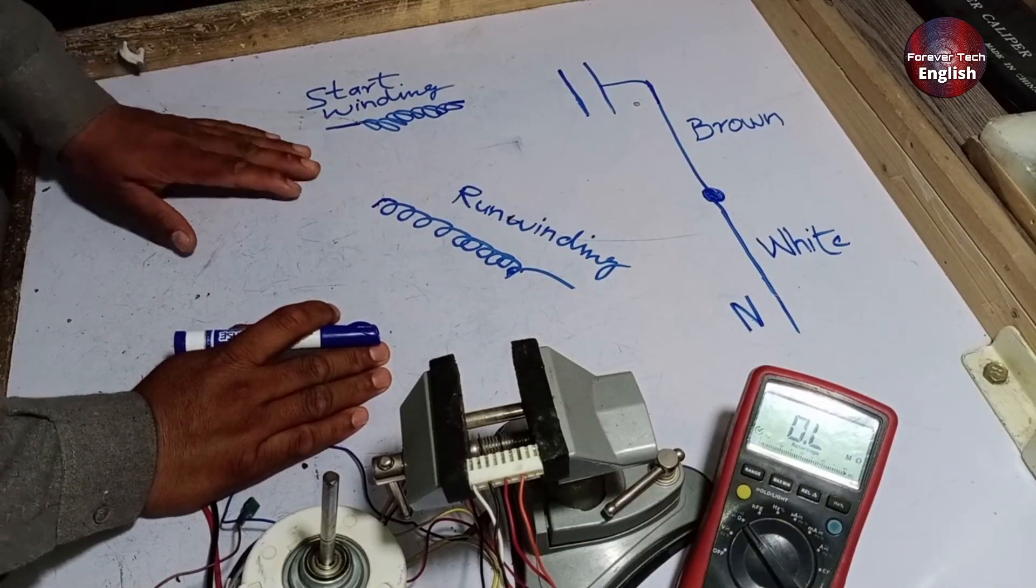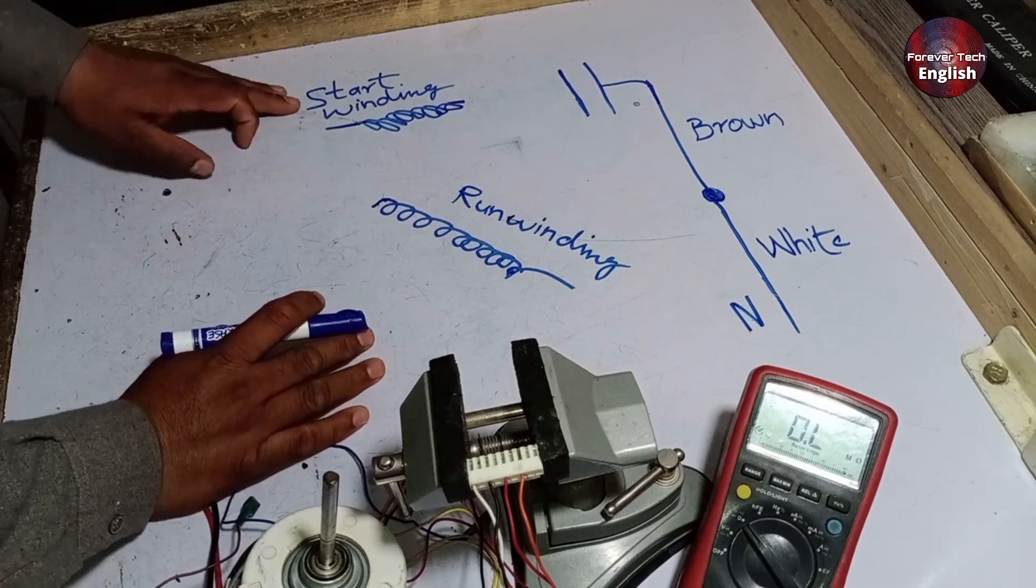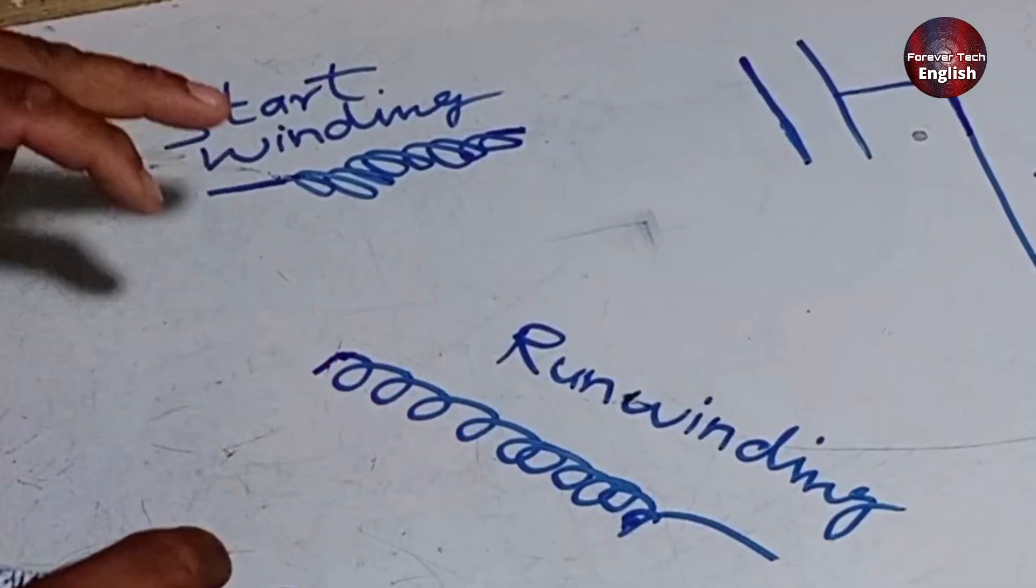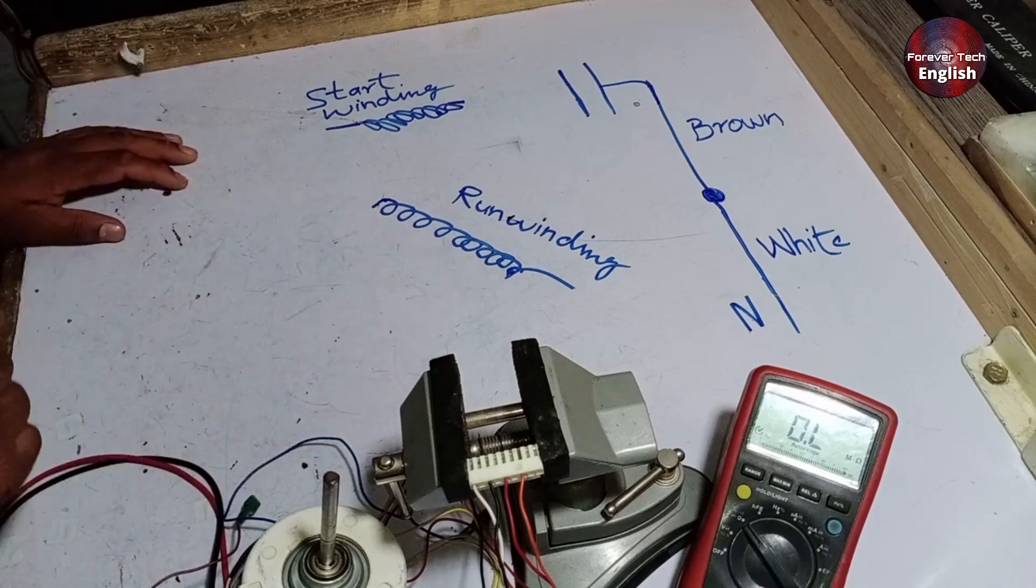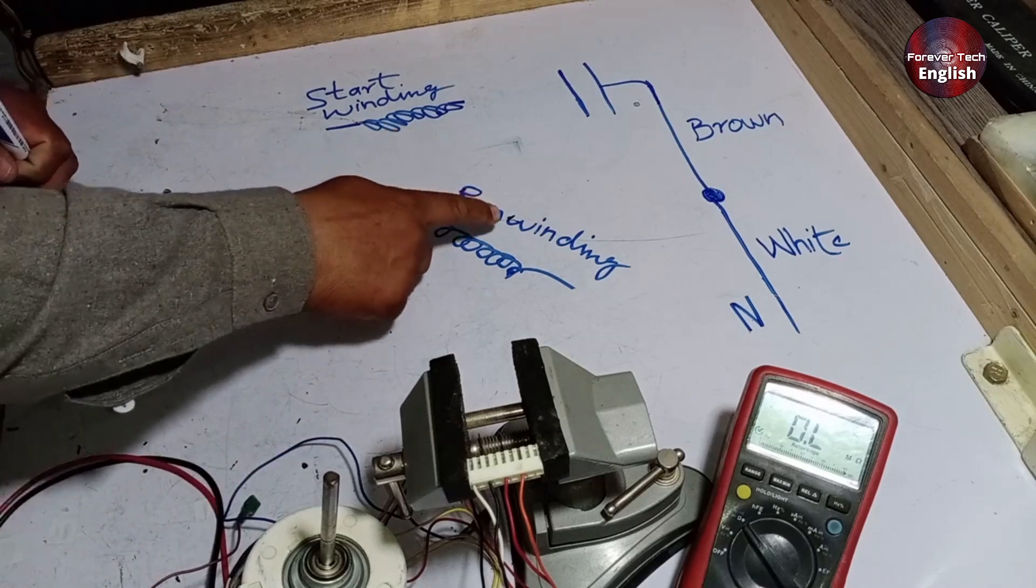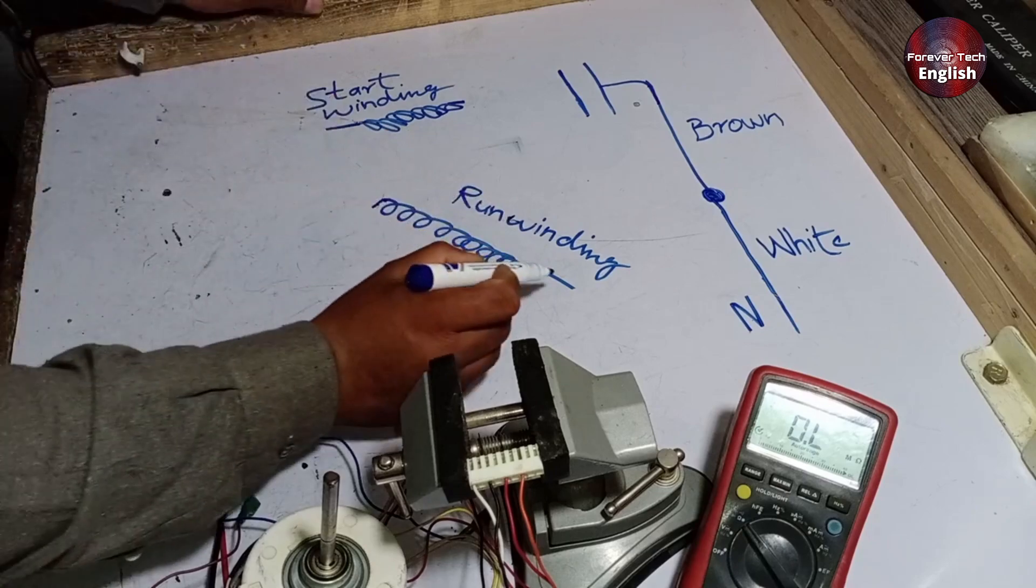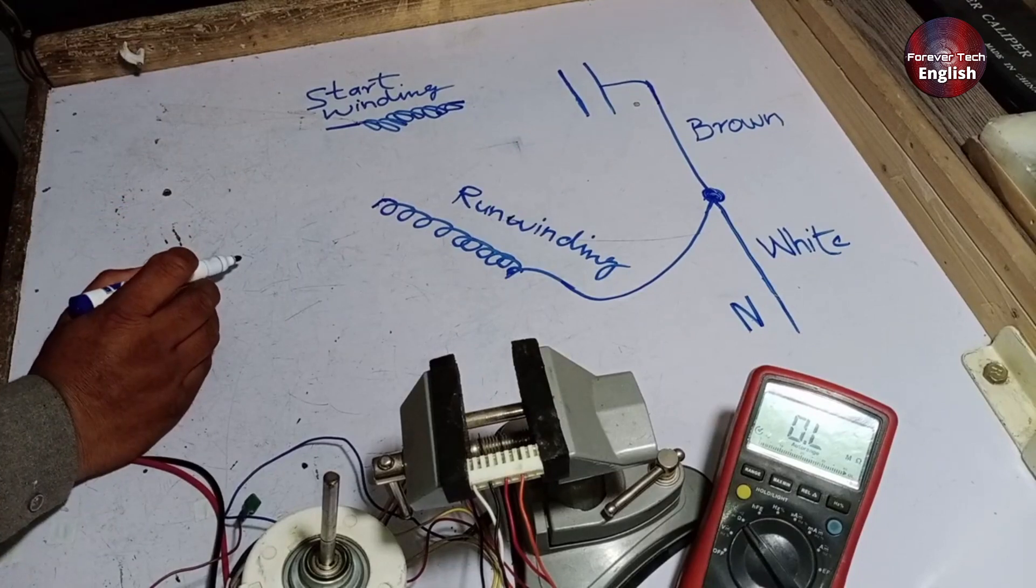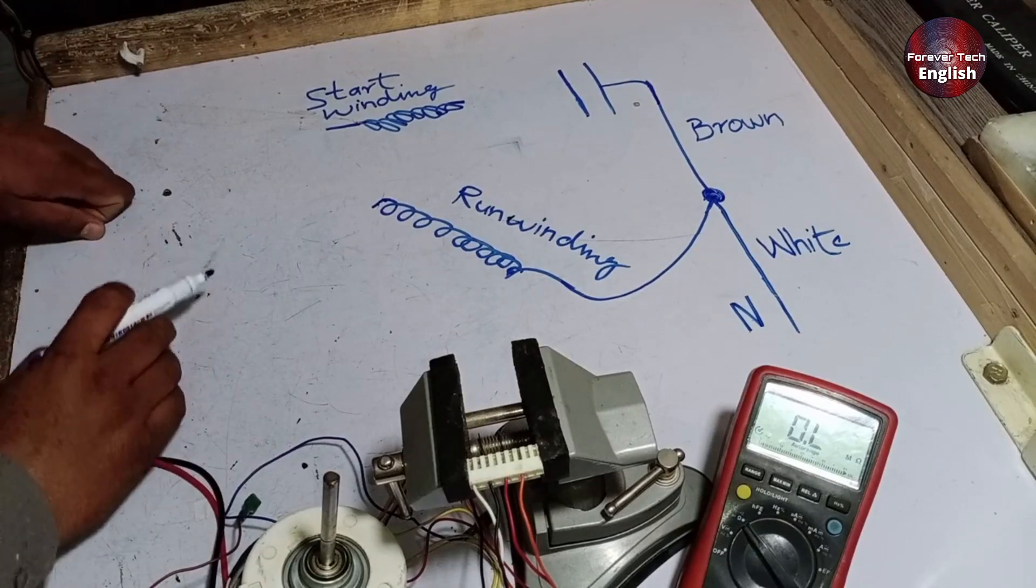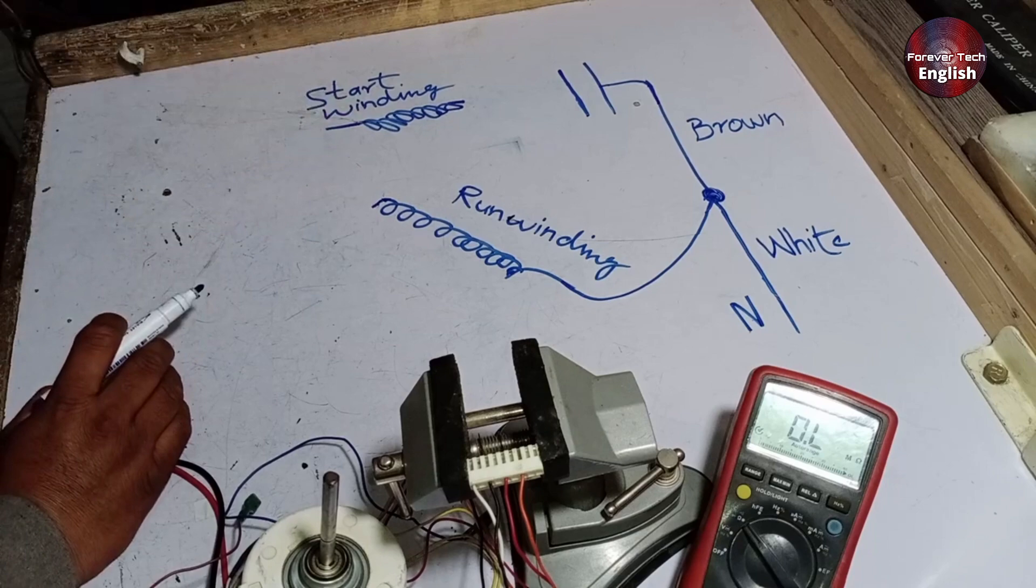We all know that when a motor is manufactured, it has both a starting winding and a running winding, and only then can it operate properly. Let's take a look at how to identify the connections among the six wires. First, when it comes to the running winding, one side of it will always be connected to the neutral. The first thing we need to find is the common point. To do that, we need to find the point with the lowest resistance value.